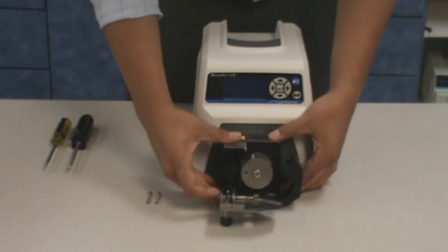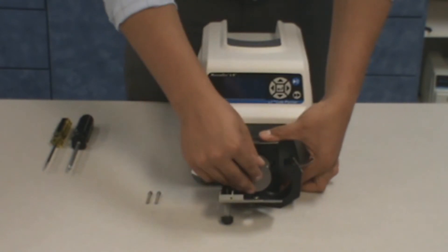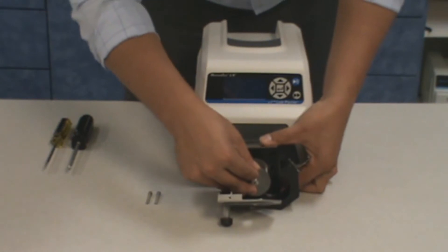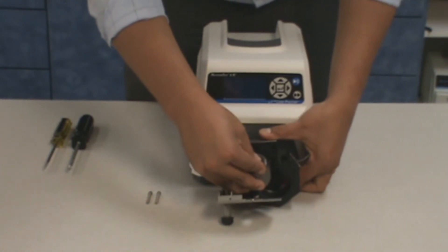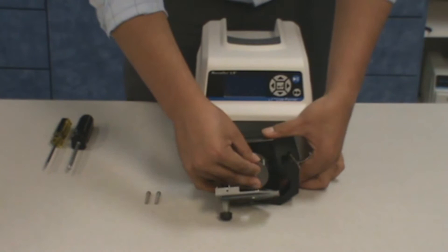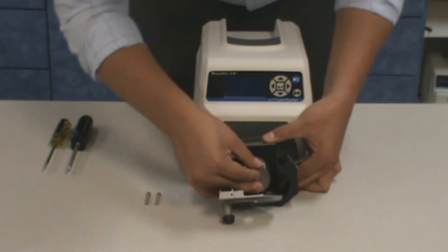Next, align the pump shaft tang with the slot in the motor shaft. If the drive you are using has alignment pins, make sure to slide the pump head alignment holes over the pins. Make sure to secure the pump head to the pump drive with the two mounting screws that are included with the head.